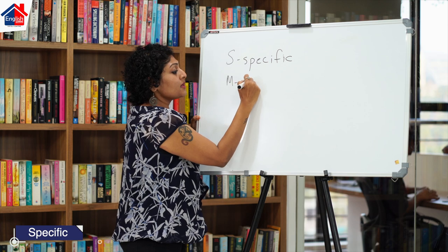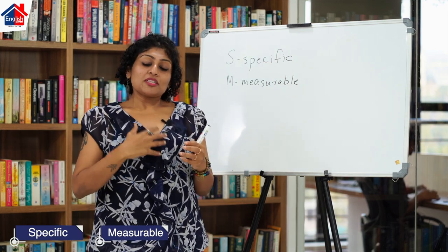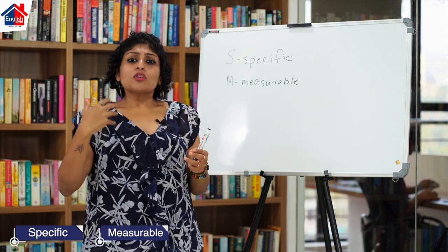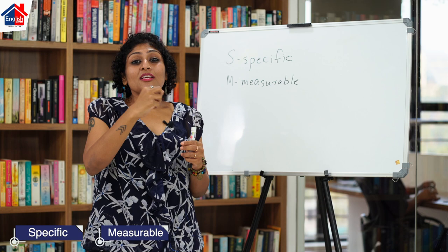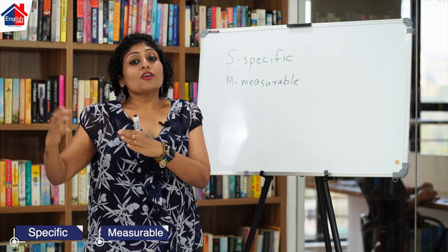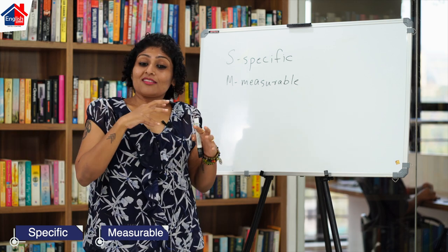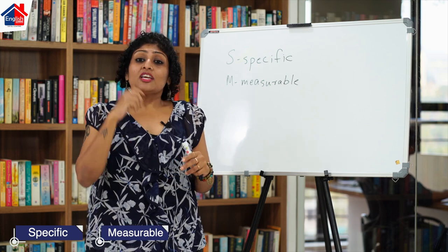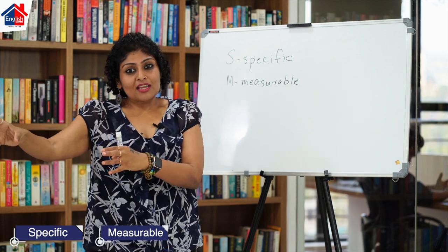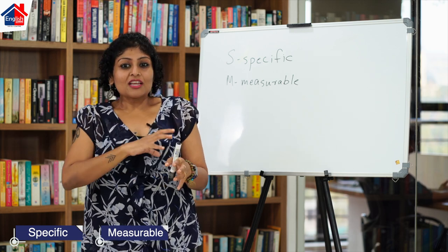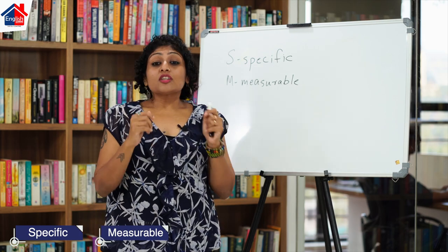M stands for Measurable. For example, I am setting a goal that next year, by April 2021, I want to be rich, which means I want to have 1 crore rupees in the bank. You should be periodically measuring your progress. Any goal that you set, over time, you should be able to measure it to understand how close you are to achieving it. If you are not close, that means your plan A is not working — it is time to do plan B. So all goals should be measurable.